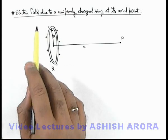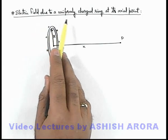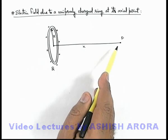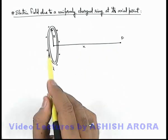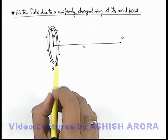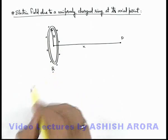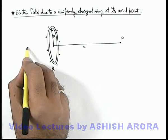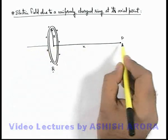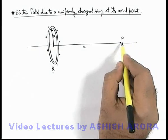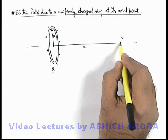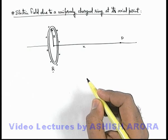Let's analyze the electric field due to a uniformly charged ring at its axial point. We are given a uniformly charged ring of radius r with a total charge q, and on its axis at a distance x there exists a point p where we wish to find the electric field.